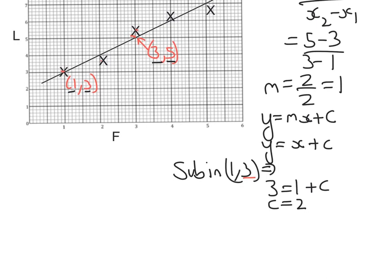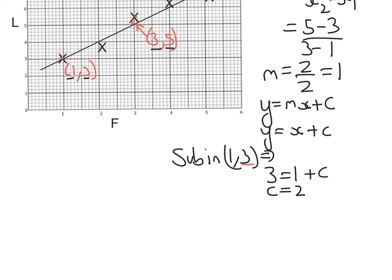So the equation of this straight line, then, is going to be y equals x plus 2. Now, y and x are not the values of the axes, that's l and f. So I need to replace y with l and x with f. So my formula is l equals f plus 2.